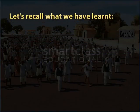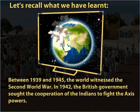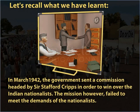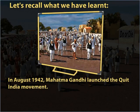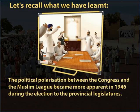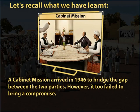In recap: Between 1939 and 1945 the world witnessed the Second World War. In 1942 the British government sent a mission headed by Sir Stafford Cripps to win over the Indian nationalists, but it failed. In August 1942 Gandhi launched the Quit India movement. In 1945 Viceroy Lord Wavell arranged meetings between the Congress and the Muslim League, but couldn't bring them together. The political polarization became more apparent in 1946 during elections to the provincial legislatures. A cabinet mission arrived in 1946 to bridge the gap but also failed to bring a compromise.